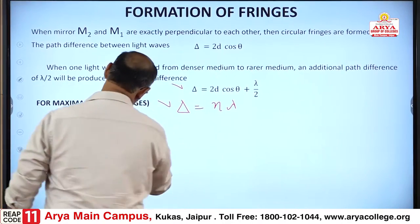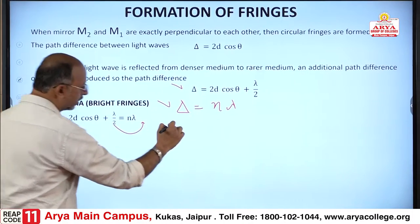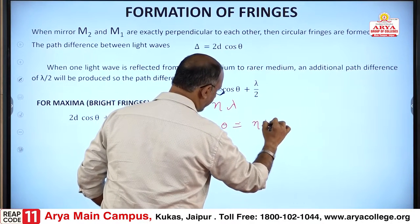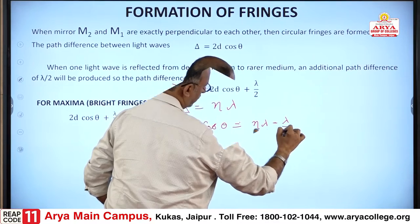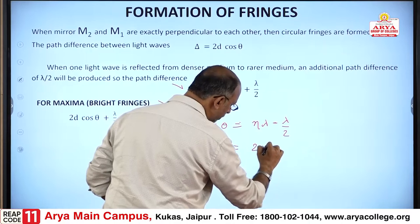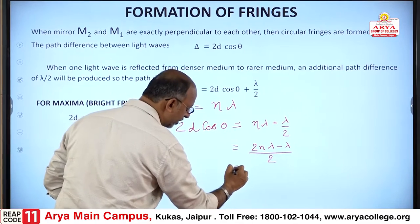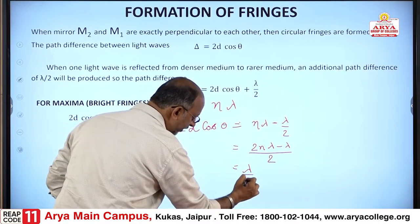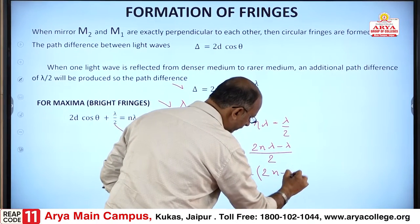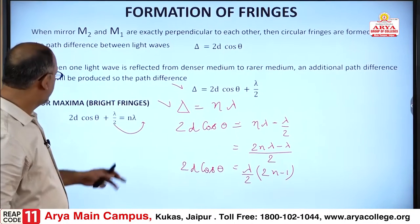Now, we take the λ/2 to the other side: 2D cosθ = nλ − λ/2. Taking LCM, the equation becomes 2D cosθ = (2nλ − λ)/2. Lambda is common, so this simplifies to 2D cosθ = (2n − 1)λ/2.